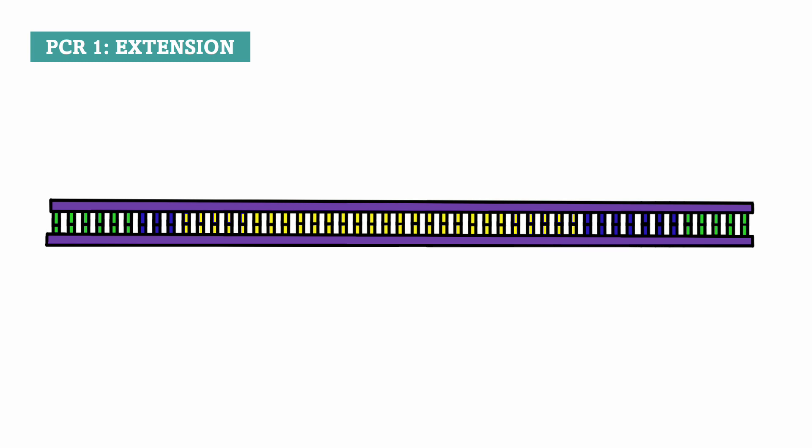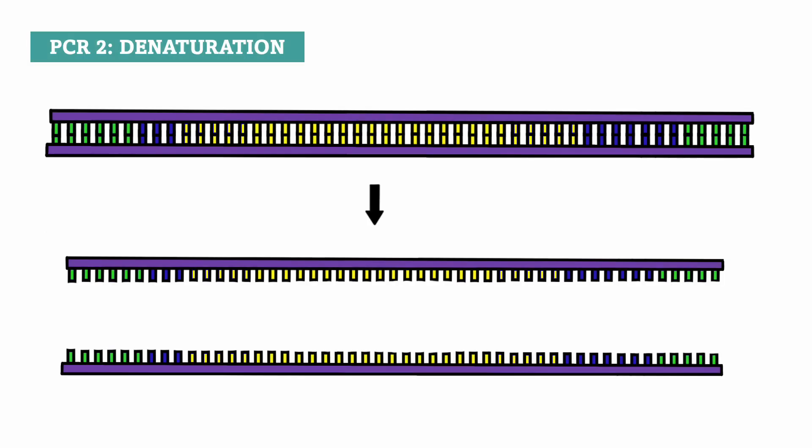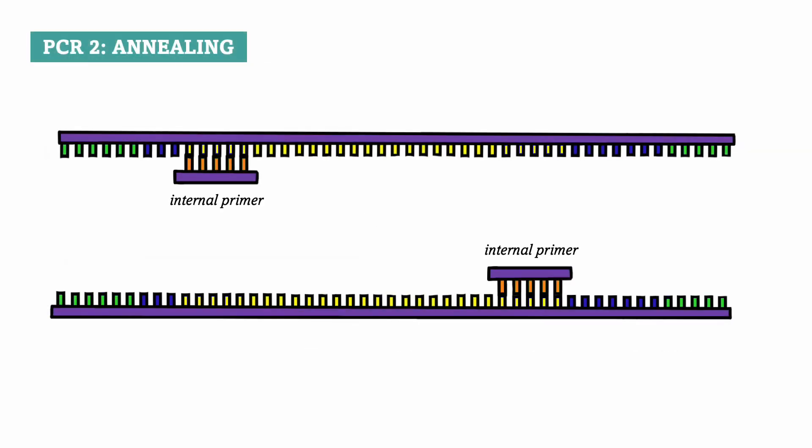Once again denaturation, separating the two DNA strands, and then annealing. But this time we use a different set of primers, called internal primers, that are designed in a way that they are complementary directly to the DNA sequence we want to amplify.